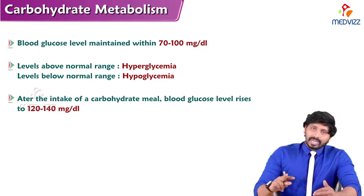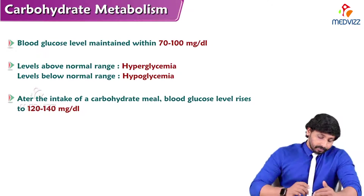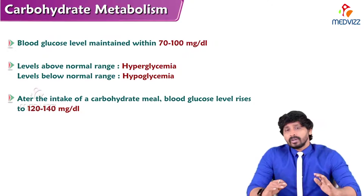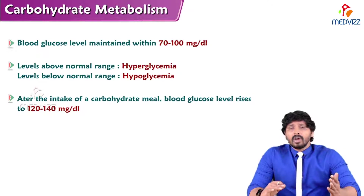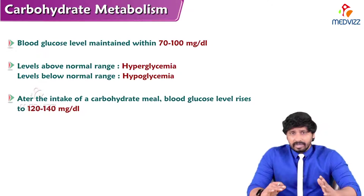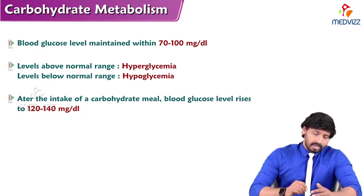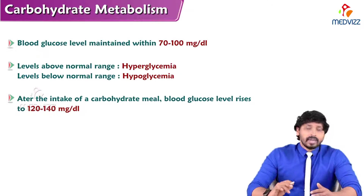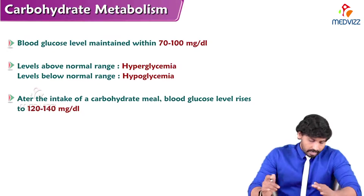There are two conditions keeping this normal range as a criterion: hyperglycemia and hypoglycemia. If blood glucose is above the normal range, that is hyperglycemia — high blood glucose concentration in circulation. Levels below the normal range lead to the condition hypoglycemia.